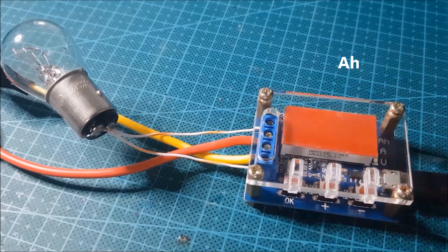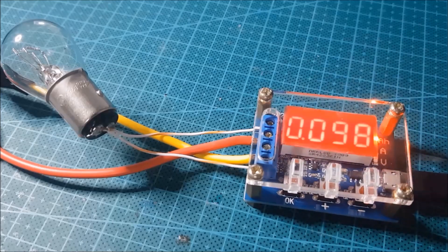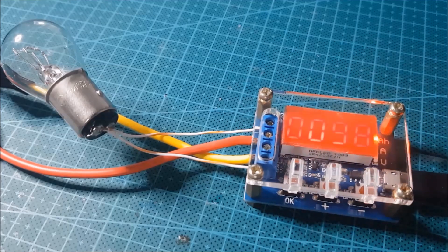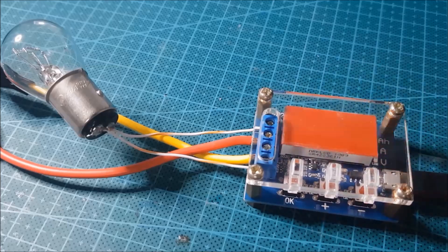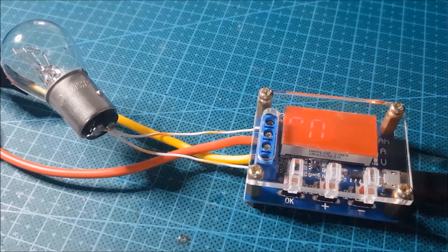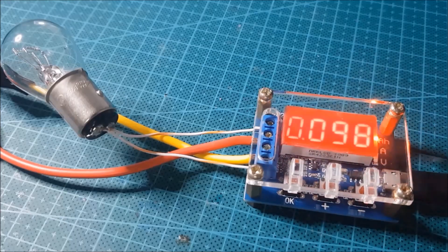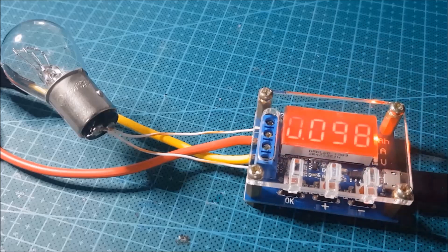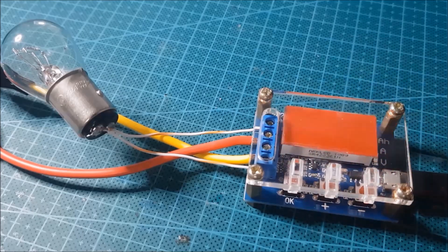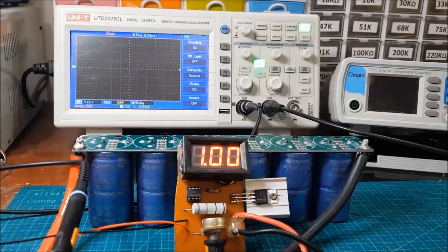So you can see this super capacitor is only 0.1 amp hour. Take into consideration that the boost converter used 20% of the energy, so the total will be 120 milliamp hours only. This is why you can't replace a battery with a super capacitor.